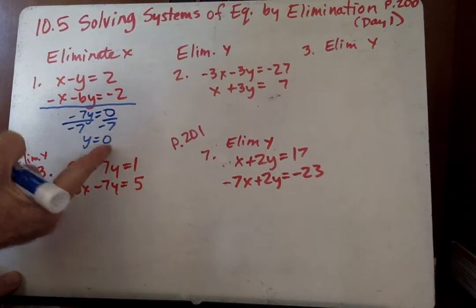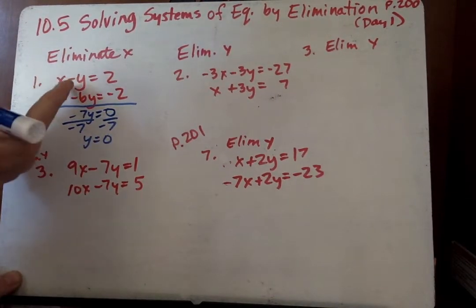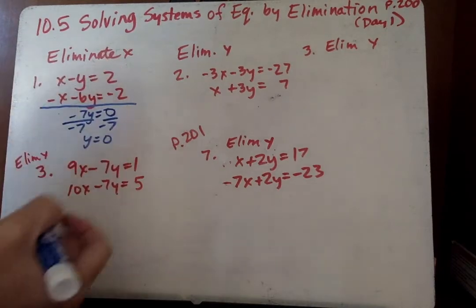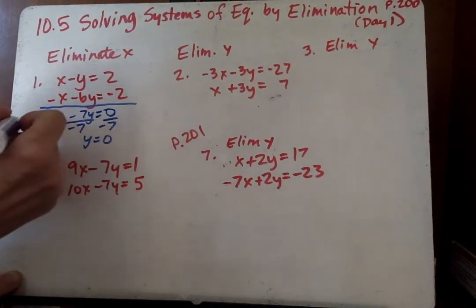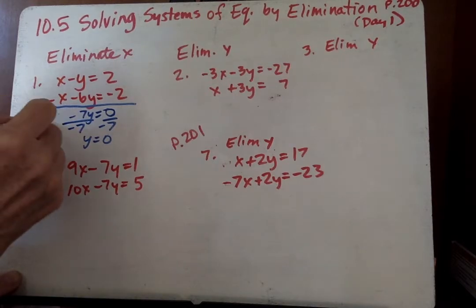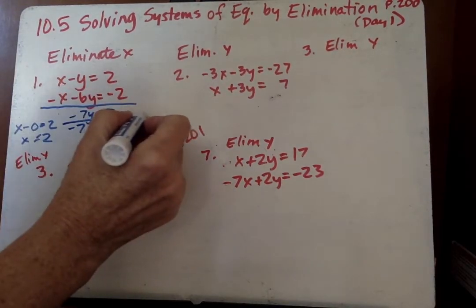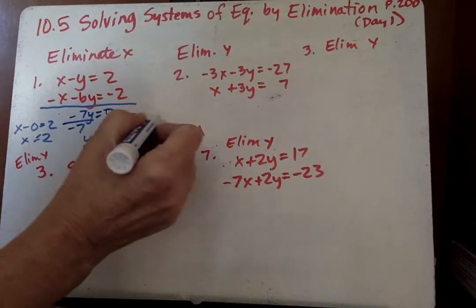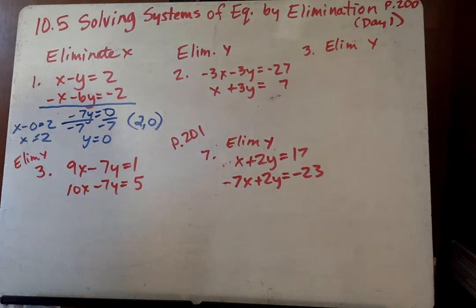Now if y is 0, now we plug it back in. What minus 0 equals 2? So we go x minus 0 equals 2 and we say x equals 2. So our solution is 2 comma 0, and we're done with number 1.